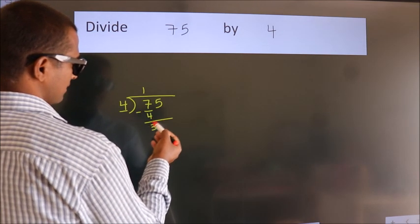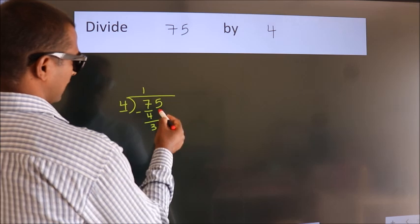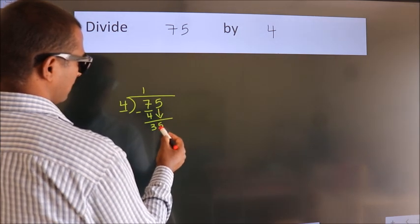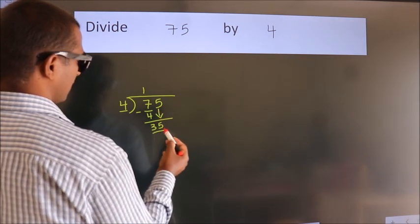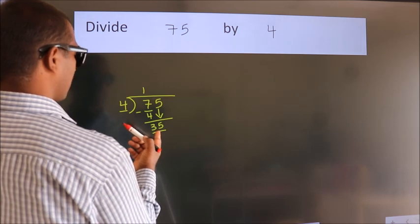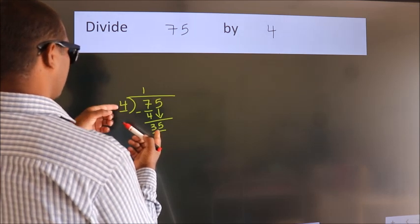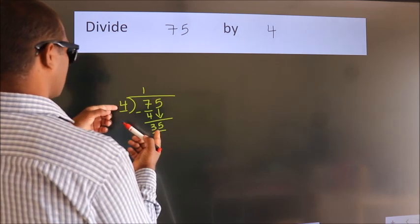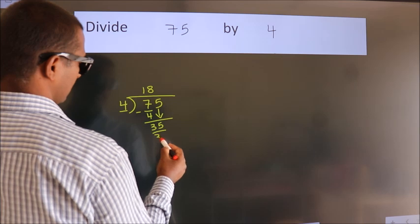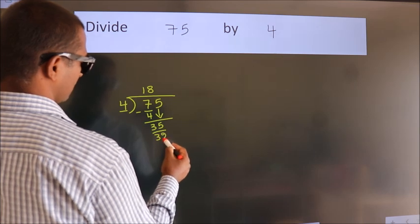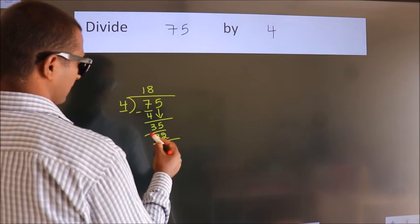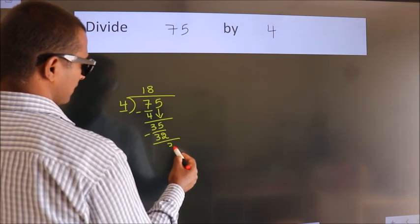After this, bring down the beside number. So, 5 down, so 35. A number close to 35 in the 4 table is 4 eights 32. Now we subtract. We get 3.